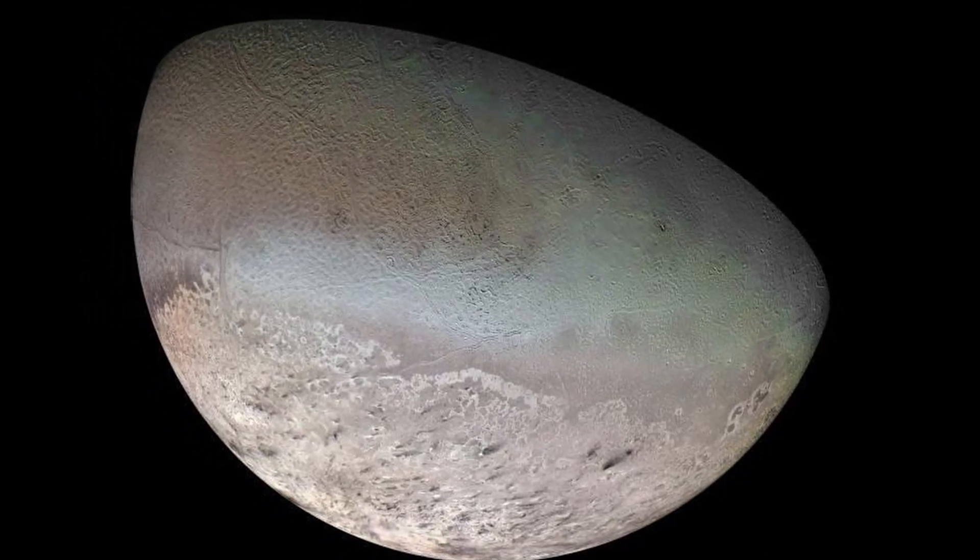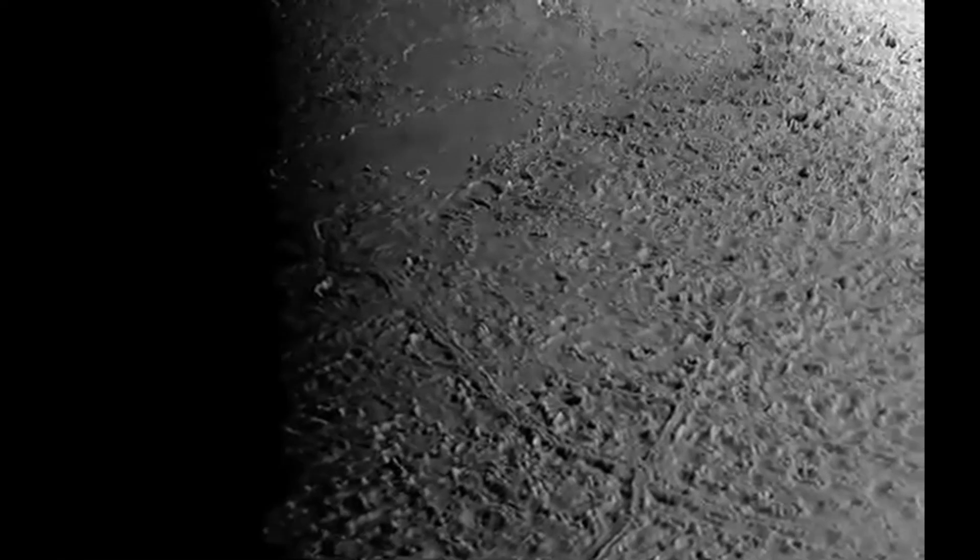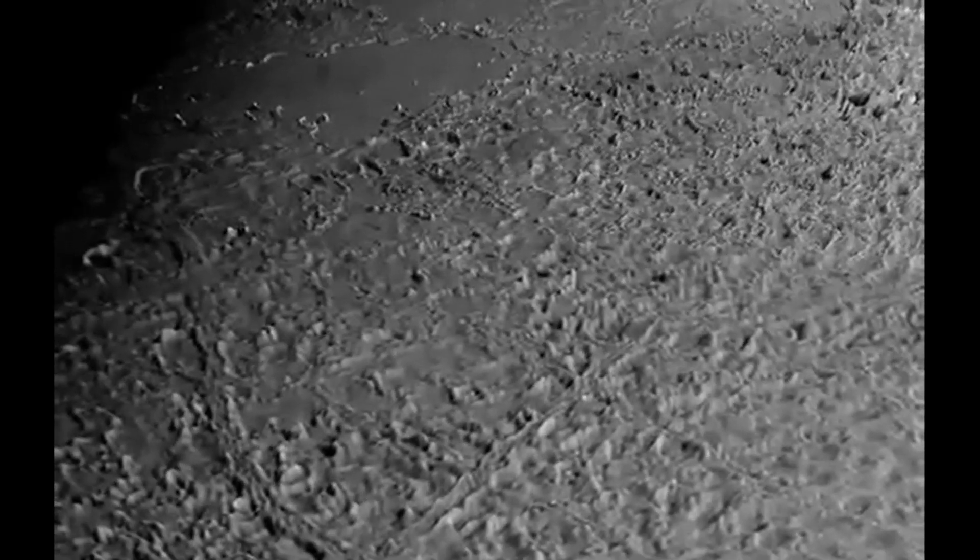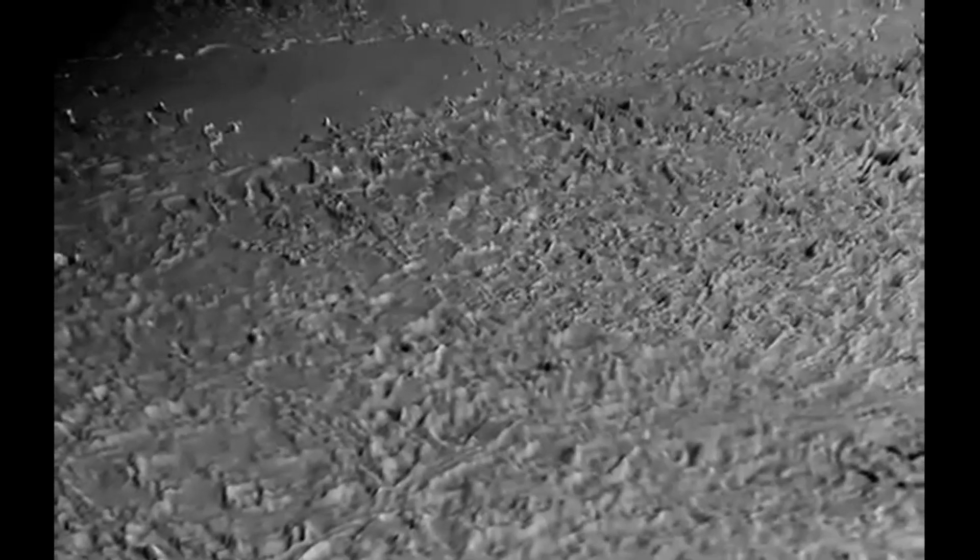It is a frozen world, smaller than our moon, which spits out particles of nitrogen ice and dust from below its surface. It is believed that Triton was caught by the immense gravitational pull of Neptune and is regarded as one of the coldest worlds in our solar system.